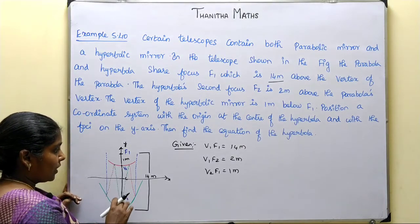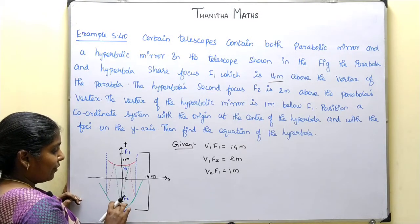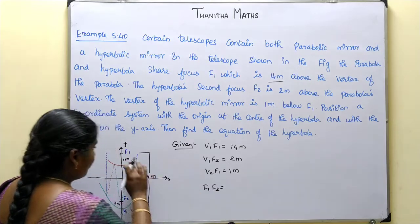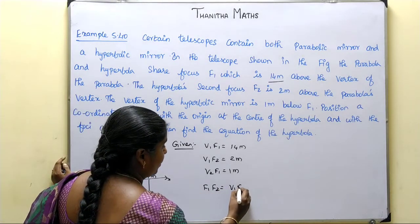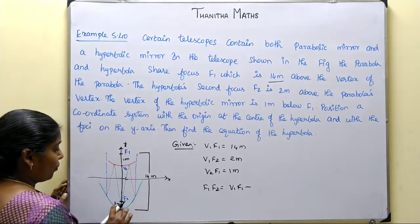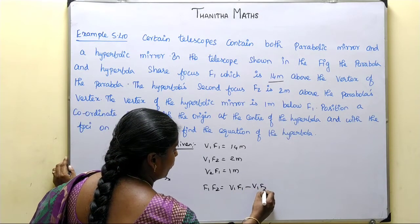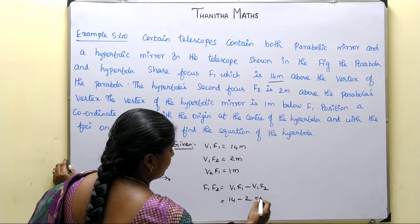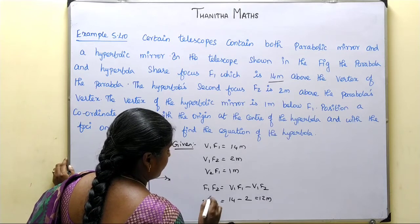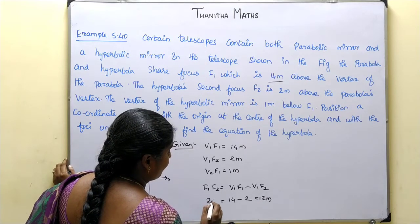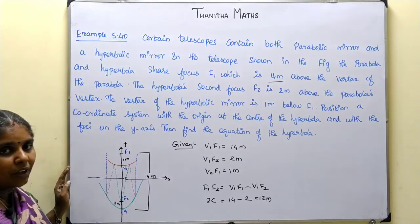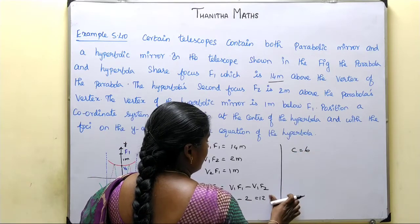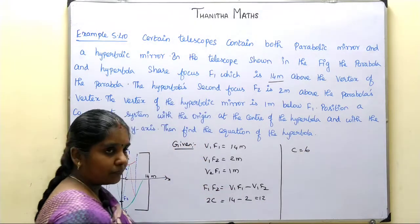From the given data, f1 to f2 equals 12 m, which equals 2c. Therefore c equals 6.